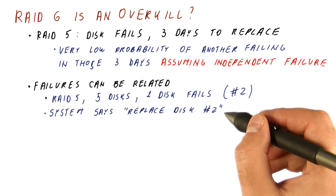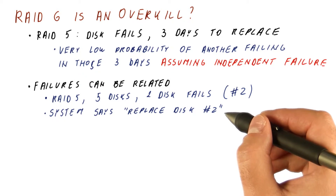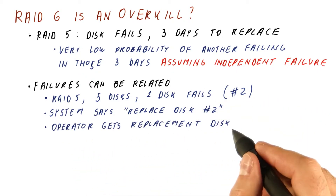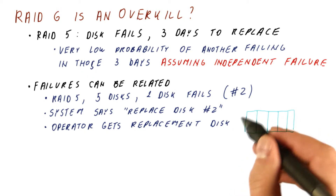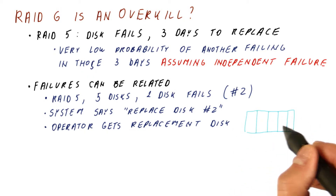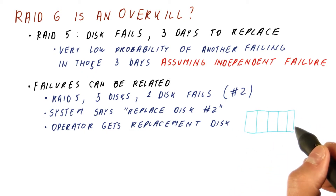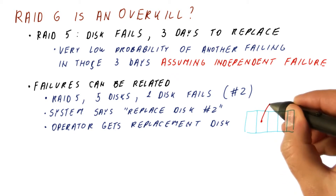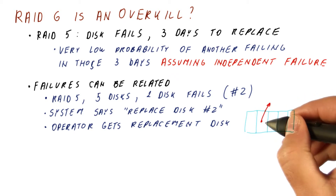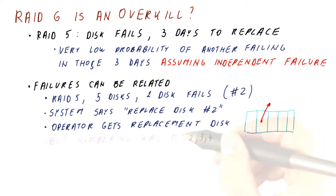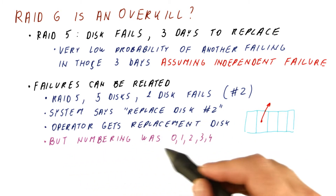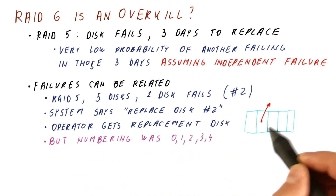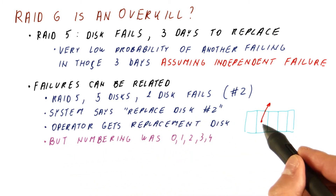Remember that it can do that with one failed disk in RAID 5. Now the operator gets a replacement disk, opens the computer case, and sees five drives. Knowing that number two has failed, they take that one out and put the new drive in. But the numbering of the disks was actually 0, 1, 2, 3, 4 — so they pulled out the wrong drive.